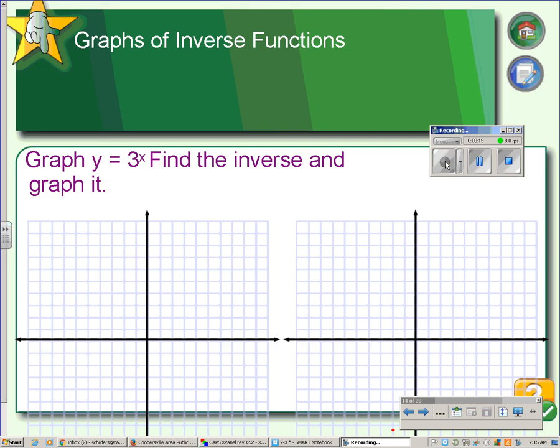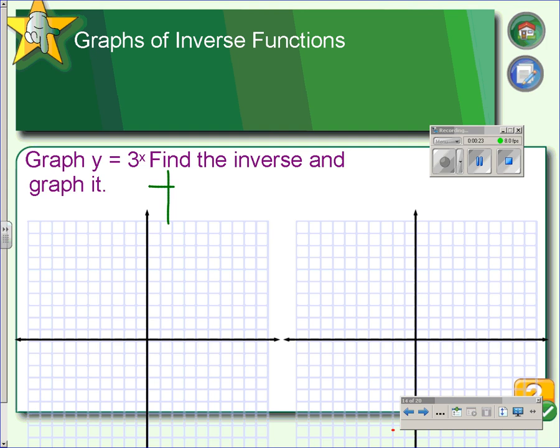The logarithmic equation is the inverse to the exponential equation. So first, we'll graph this exponential equation. When x is 0, y would be 1. When x is 1, y would be 3. So we can plot these points, put in the asymptote, and draw the curve.